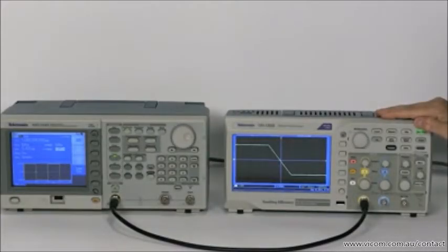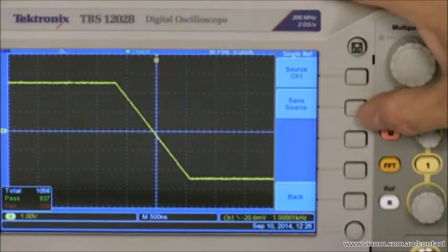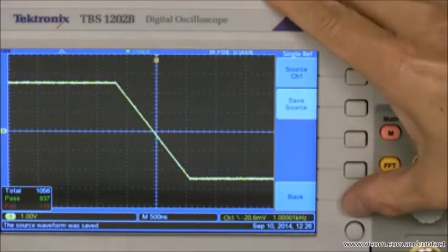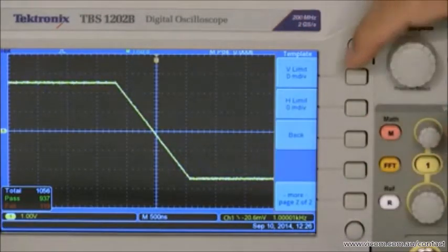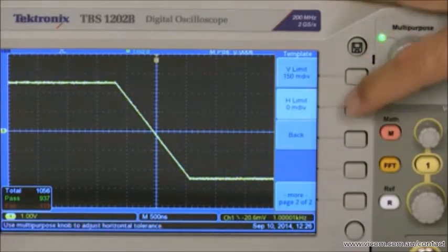In standard limit testing, you create a template using a single reference as the golden standard. Then you specify horizontal and vertical tolerances to create boundaries for the test. The TBS1000B includes this capability.